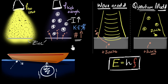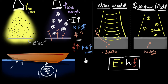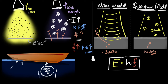The second result: if you increase the frequency of light, the kinetic energy of emitted electrons increases — they come out with more energy. This makes sense because higher frequency means higher photon energy, so electrons gain more energy when they absorb that photon and come out with more energy.